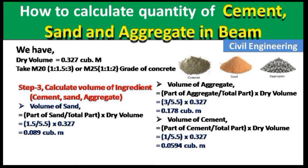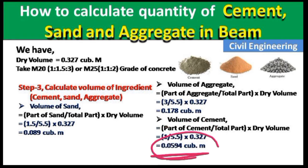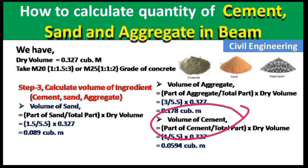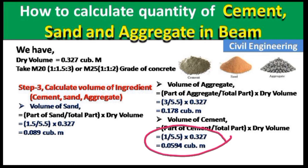For cement: part = 1, total parts = 5.5. Volume of cement = (1 / 5.5) × 0.327 = 0.0594 cubic meters. Note: cubic meters and meter cubes are the same unit, so don't be confused. We can measure sand and aggregate by volume, but cement is sold in bags in the market, so it is better to convert volume of cement into number of bags.